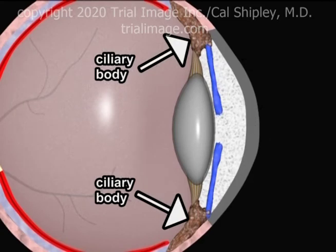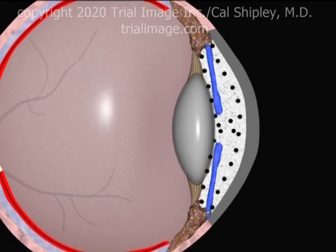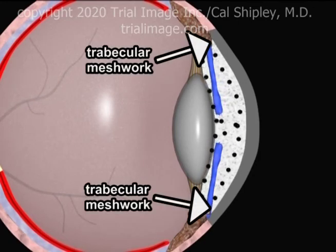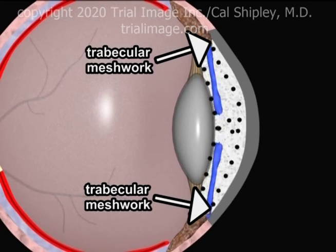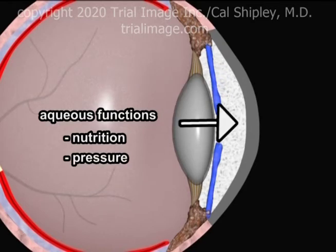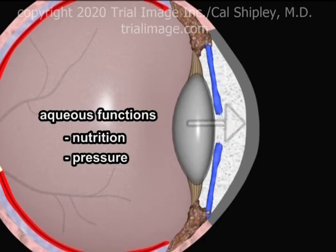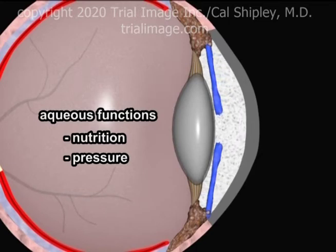The aqueous is produced by the ciliary bodies, circulates throughout the posterior and anterior chambers, and then is reabsorbed in the anterior chamber through the trabecular meshwork, located at the peripheral margin of the iris where it inserts into the ciliary body. The aqueous humor provides nutrients to the cornea and the lens, neither of which have their own blood supply. The aqueous humor also provides inflationary pressure in the anterior chamber to maintain proper expansion and curvature of the cornea. A condition known as glaucoma occurs when intraocular pressures are too high, usually as a result of inadequate reabsorption of aqueous humor.